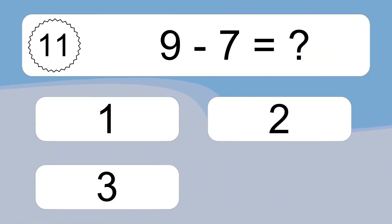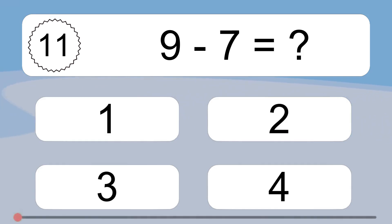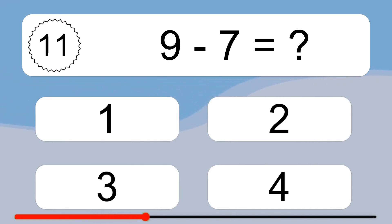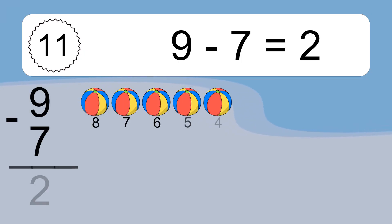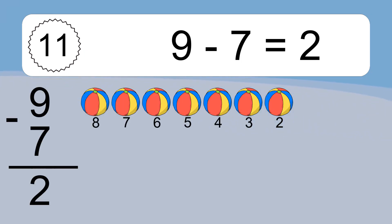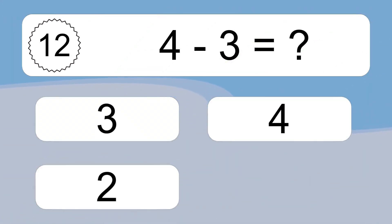9 minus 7 equals what? 9 minus 7 equals 2. Let's count it. 8, 7, 6, 5, 4, 3, 2.